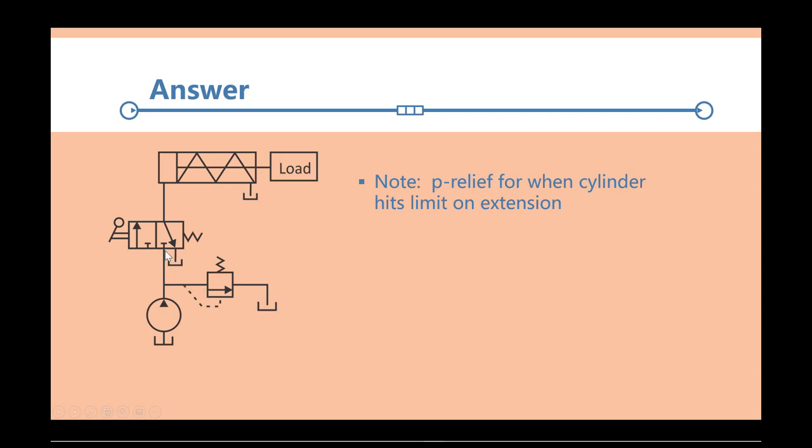If we actuate the valve, so we push on the lever, and that makes this envelope active, then our fluid flows through, goes into the cylinder, into the cap end of the cylinder, and pushes the cylinder to the right. Now this is a special cylinder in that it has a spring in it. And that's a bias that if you don't actuate it, then what the spring wants to do is it wants to retract the cylinder. So we have pressure to extend the cylinder, and then no pressure to retract the cylinder.